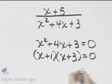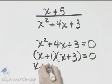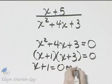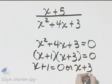And then remember, we'll set each factor equal to zero. So x plus one equals zero or x plus three equals zero.